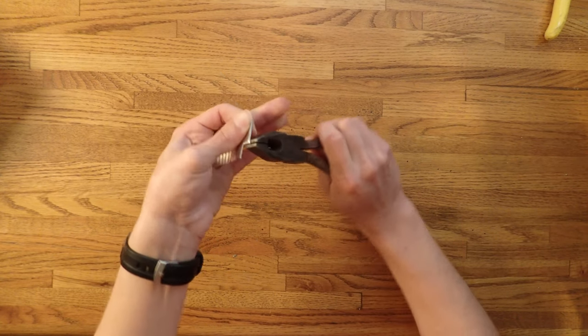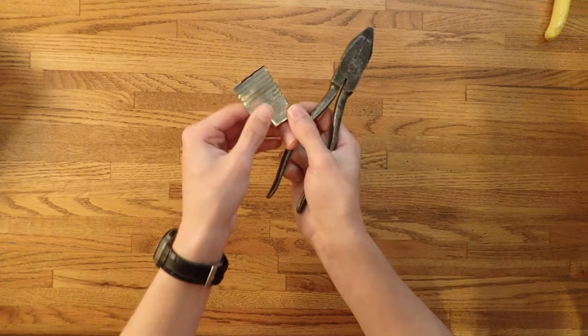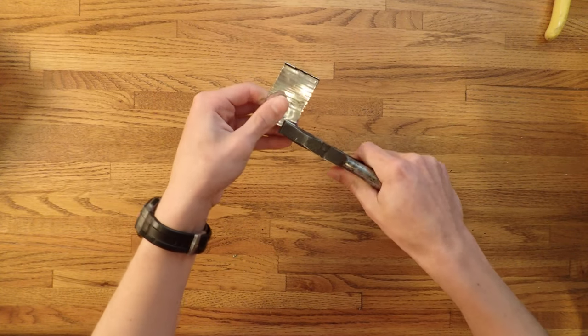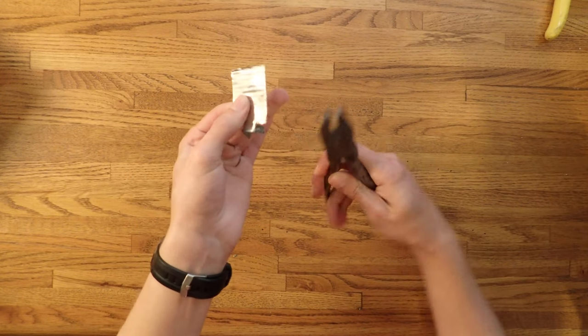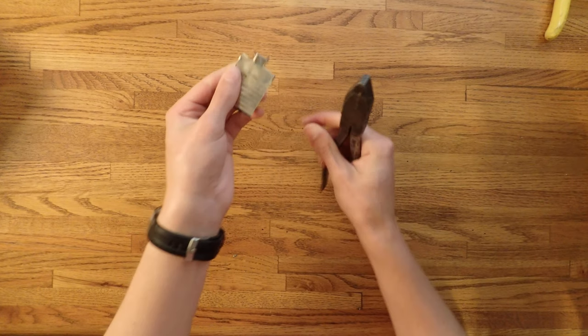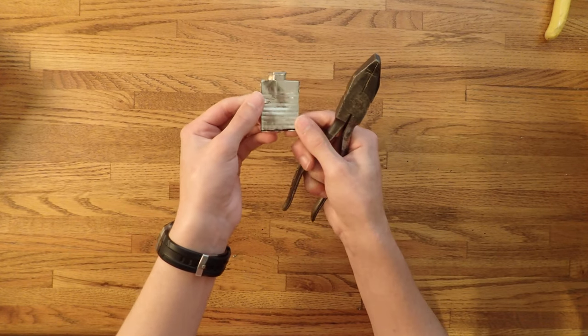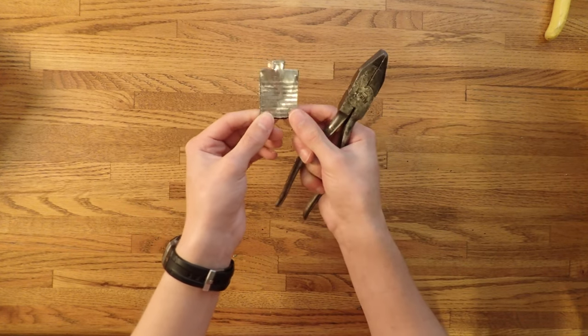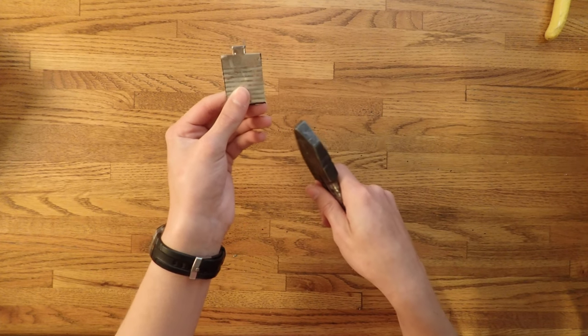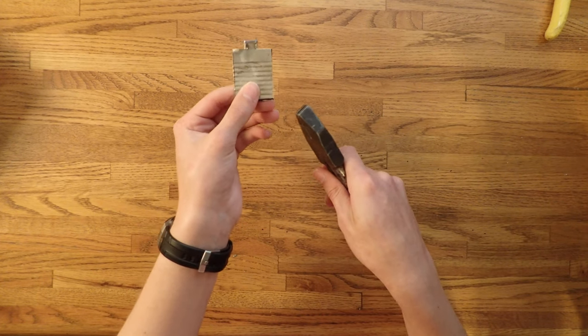Now at this point you can choose to shape your scale however you want. What I usually do is simply bend down the corners so they're not sharp anymore.